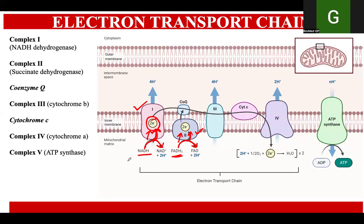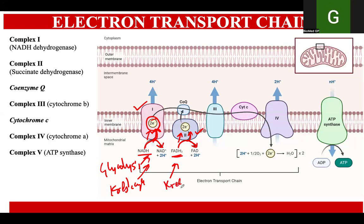Now, from where are NADH and FADH2 coming? NADH is coming from glycolysis and the Krebs cycle, and FADH2 is produced in the Krebs cycle.